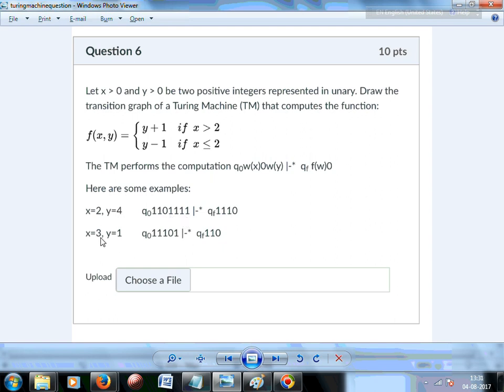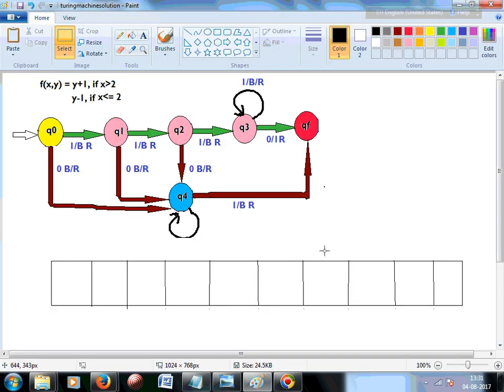In the second example, x is equal to 3, then there are 3 ones followed by a 0 and then there is only 1. Y is equal to 1, then there is only 1 one. So this is the way it is represented, and this is actually the Turing machine for the very same problem.